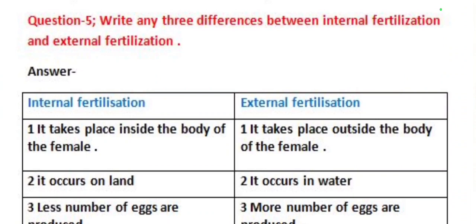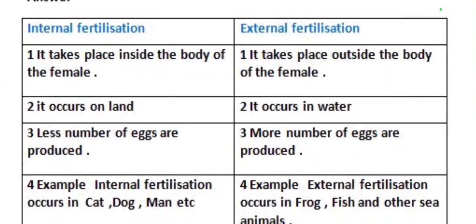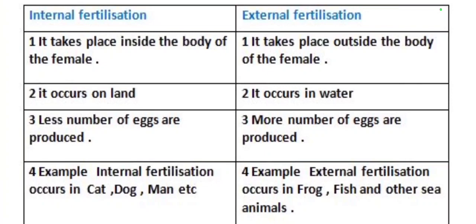In internal fertilization, less number of eggs are produced, whereas in external fertilization, more number of eggs are produced. Examples of internal fertilization: it occurs in cat, dog, man, etc. Whereas external fertilization occurs in frog, fish, and other sea animals.